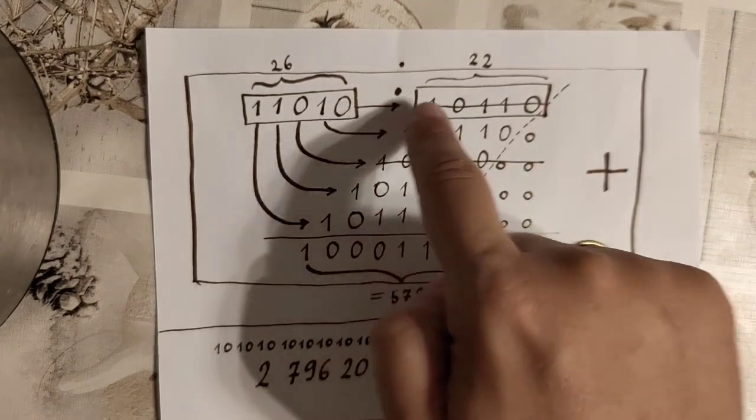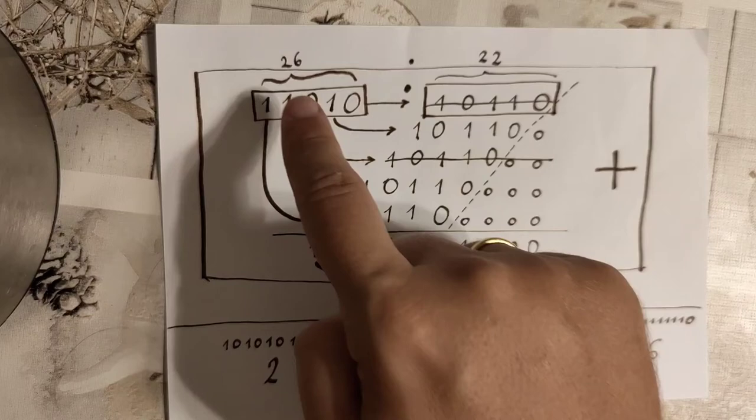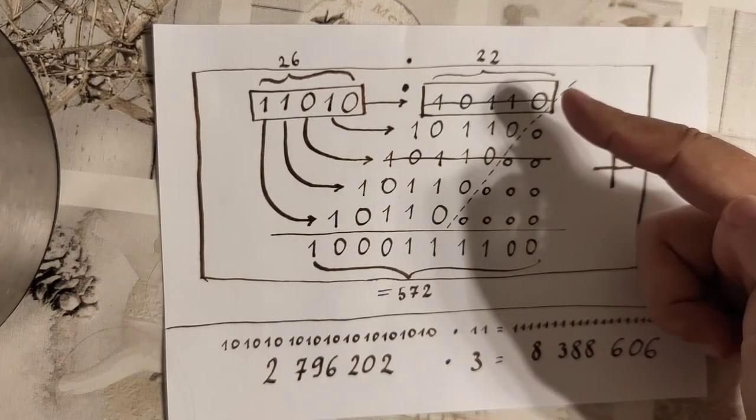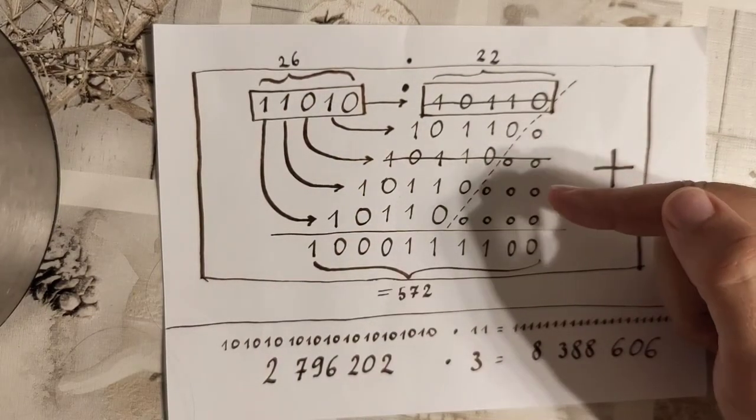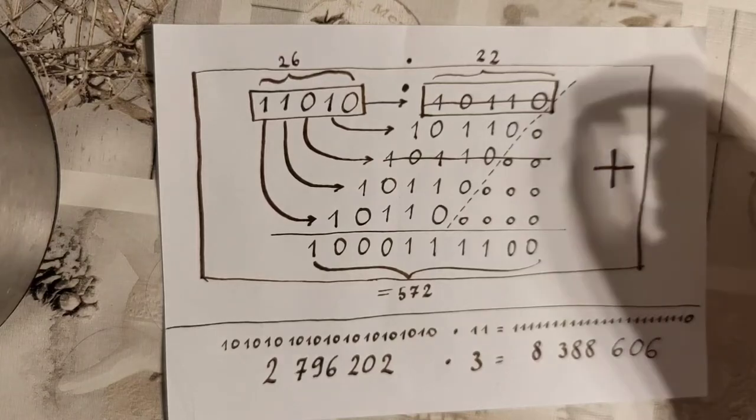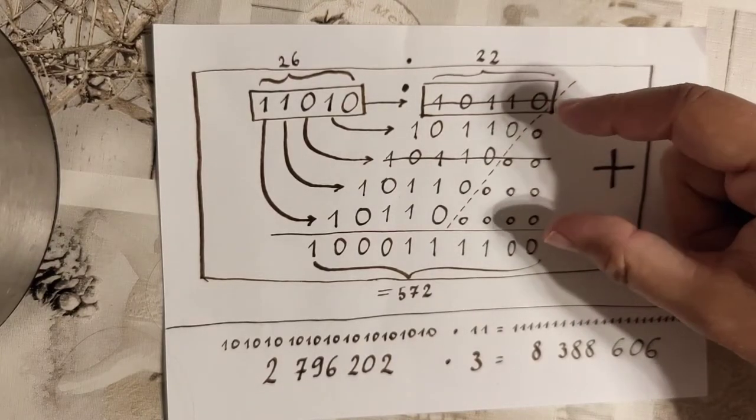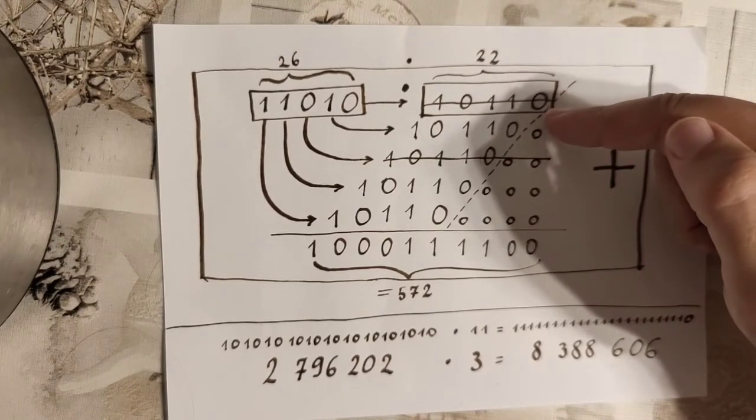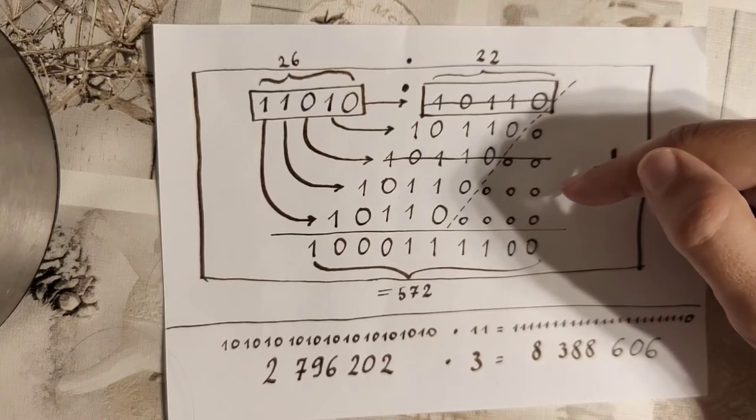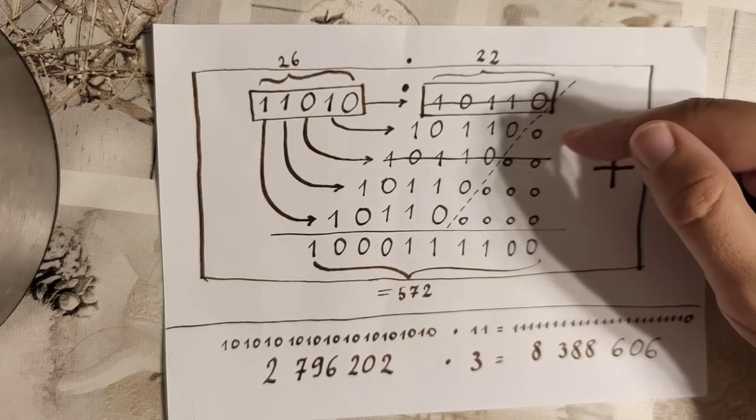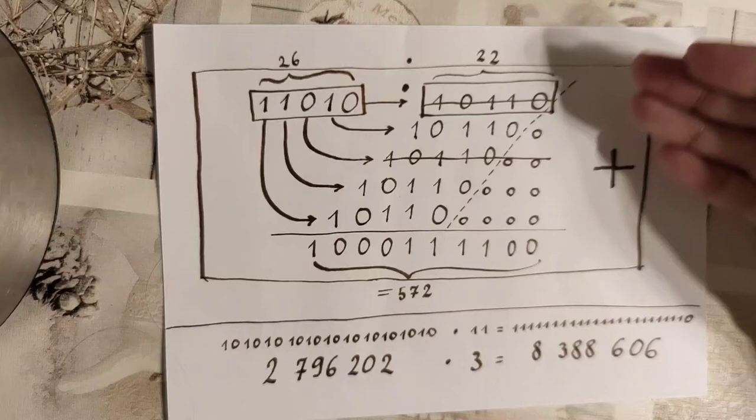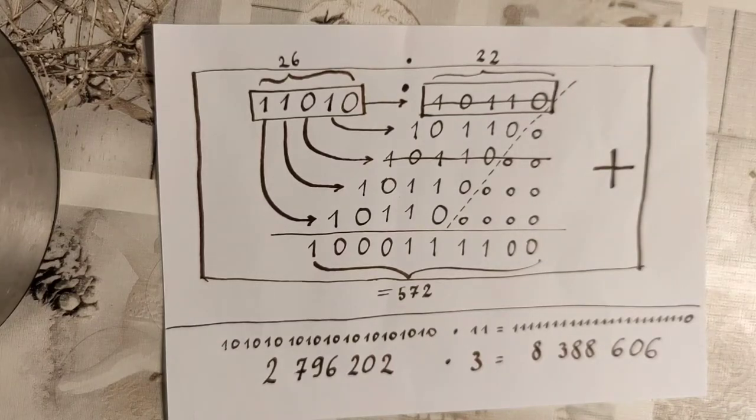striking those places which correspond to a zero in the other number and then finally simply adding up the intermediate results. Indeed you may add them up simply pair wise, that is add the one to the next one then getting this intermediate result adding it to the next one and so forth for as long as your number is.